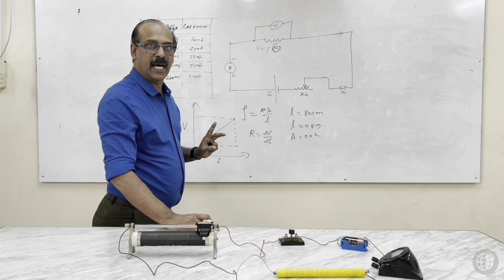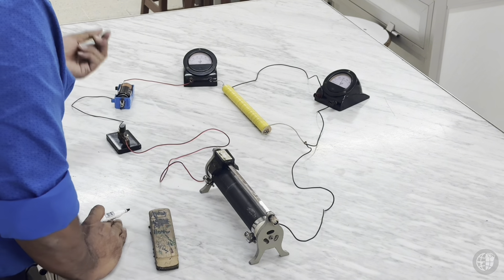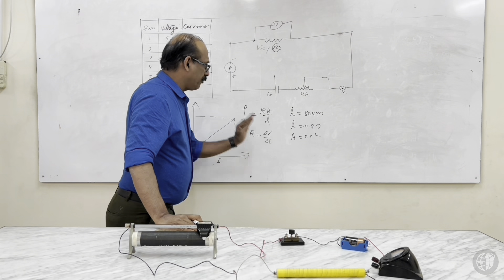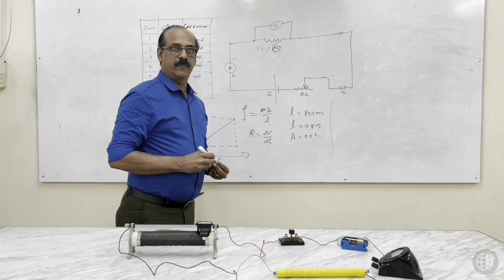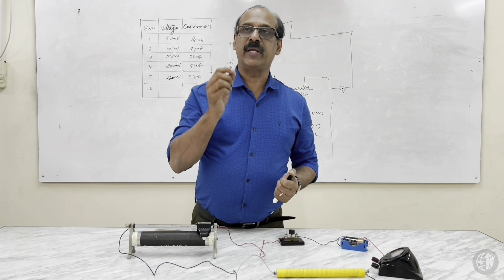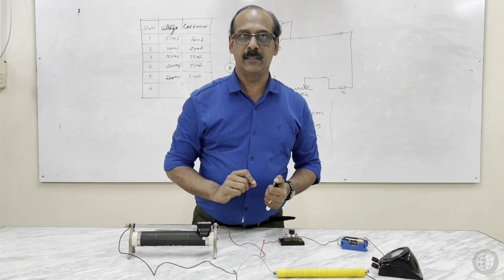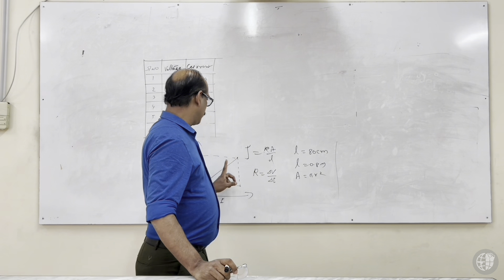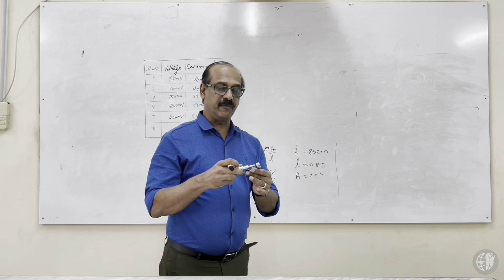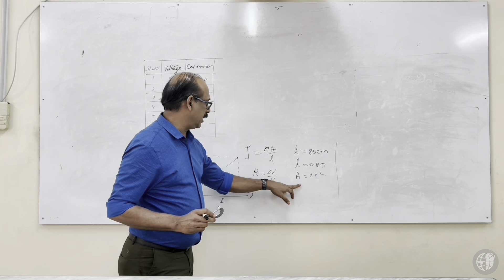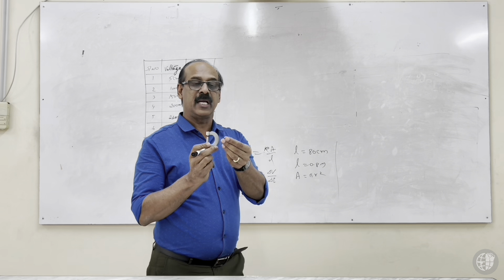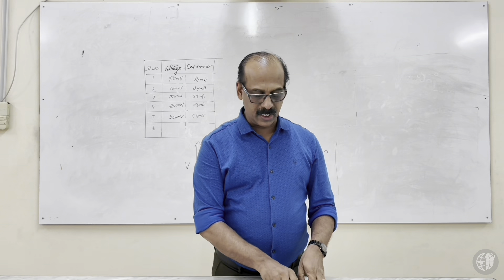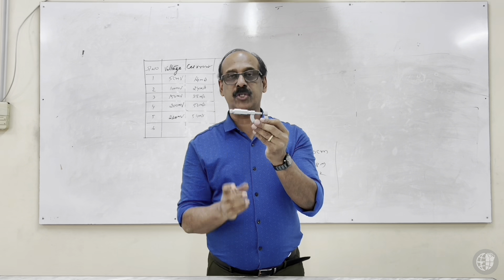After this, we use a screw gauge to find the diameter of the wire. First we calculated the resistance of the wire from the graph and table. Then we find the radius and calculate the area of cross-section using A equals pi r squared. The screw gauge has a pitch scale with millimeter readings and a head scale with around 50 divisions.